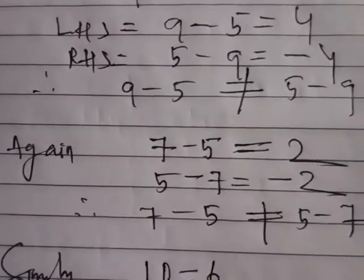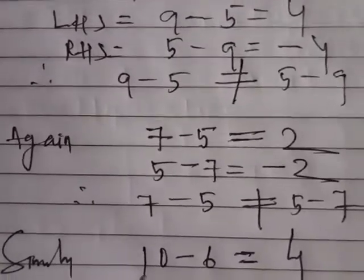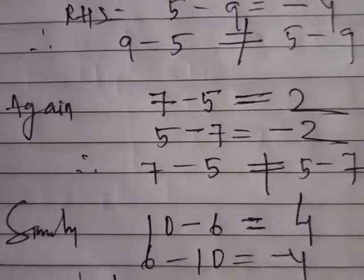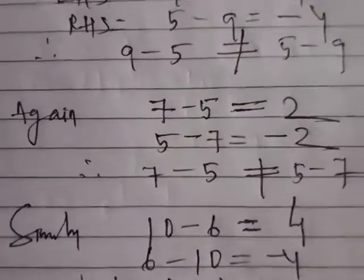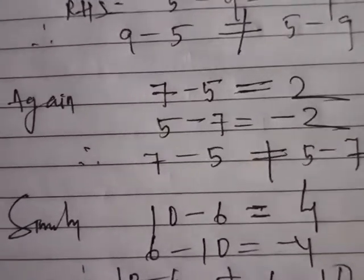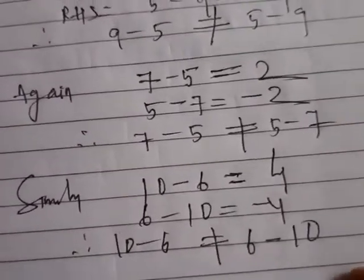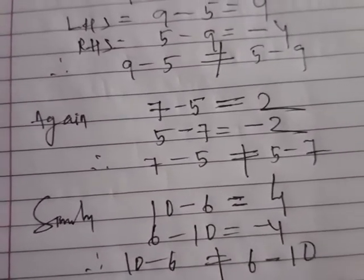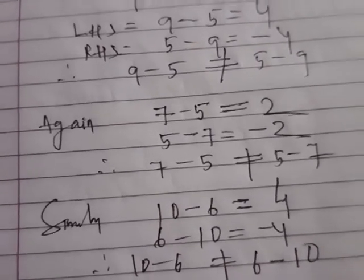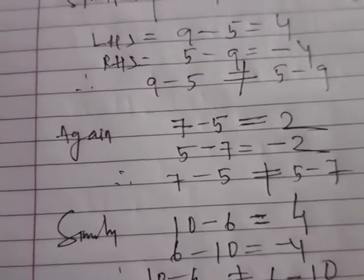Similarly, 10 minus 6 equals 4 and 6 minus 10 equals minus 4. They are not the same. So 10 minus 6 is not equal to 6 minus 10. Thus subtraction does not obey commutative law for whole numbers.